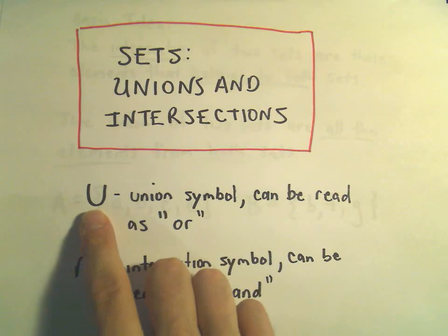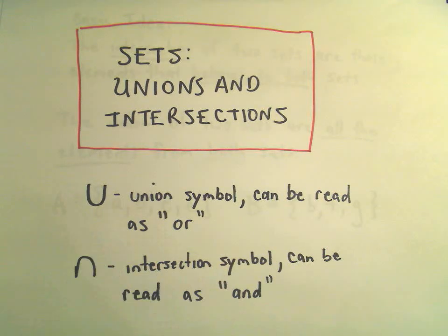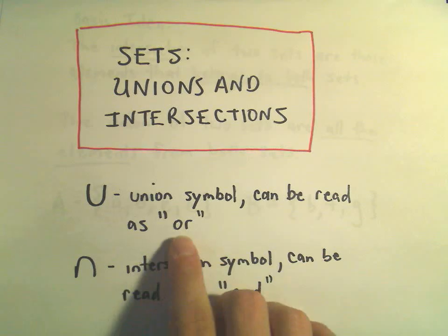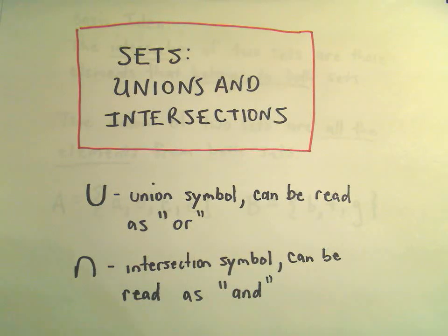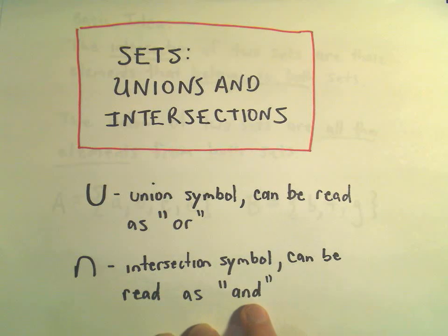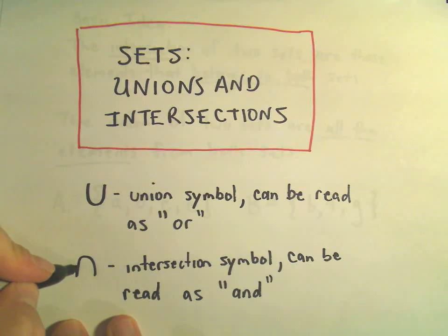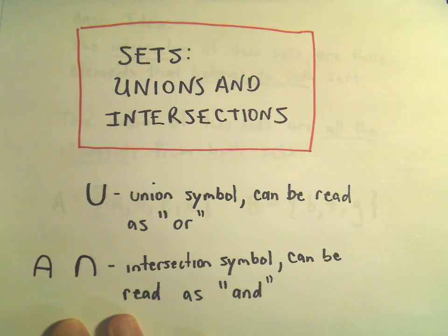The union symbol looks like a little U, and you can read this in English as the word or. And the upside down U, that's what's known as the intersection symbol, and this can be read as the word and. And I always remember that just because the intersection symbol almost looks like an A, which reminds me of the word and.